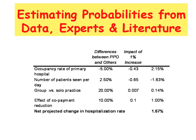Now it's time to estimate the probabilities of various events. We can do so by relying on literature as well as asking from experts. Here we are trying to estimate the probability of changes in the hospitalization rate. The column called 'Impact of 1% Increase' was read from the literature, and the section called 'Differences between PPO and Others' was obtained by asking experts.